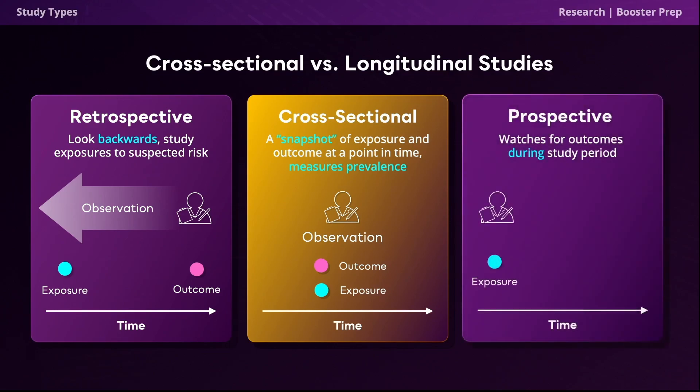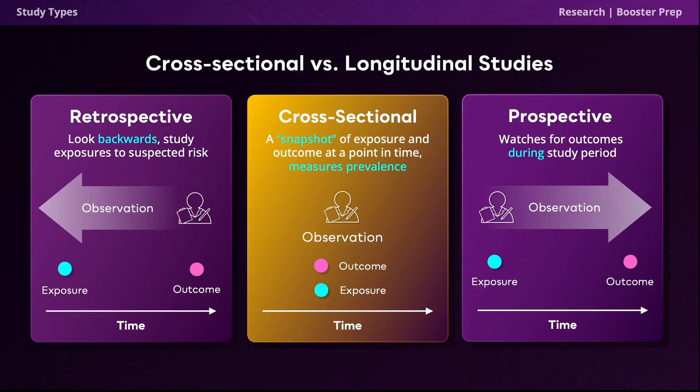A prospective study, on the other hand, watches for outcomes such as the development of disease during the study period and relates this to risk or prediction factors. Different from retrospective studies, prospective studies usually have fewer potential sources of bias and confounding variables since the study has not already occurred, allowing greater effort to ensure closer patient follow-up. An example of a prospective study includes tracking patients who use vape pens and assessing their caries risk. It's important to note that both cross-sectional and longitudinal studies are used to measure association between variables.